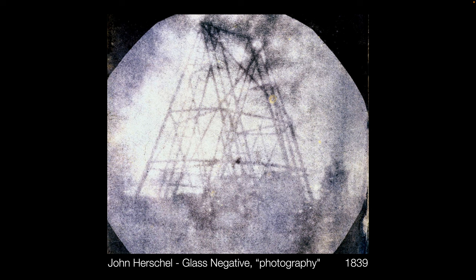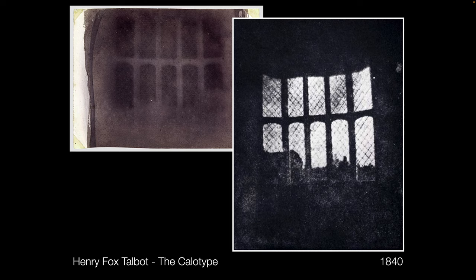Around this same time there are a couple of English inventors and photographers trying out some other processes. John Herschel is trying out a glass negative type of photography. The glass negative is new and inventive because the Daguerreotype is a one-off — you take one picture, it gets turned into a positive by mercury exposure and mounted against black velvet. But Herschel is creating glass negatives that can be printed and used to make multiple copies of the same image. Around this same time, Henry Fox Talbot is working on something called the Calotype, which is a paper negative — you can see the paper negative in the upper left and the print from it in the lower right.